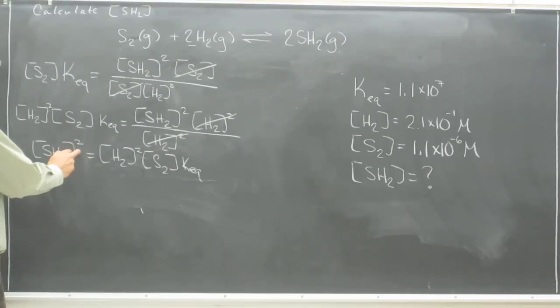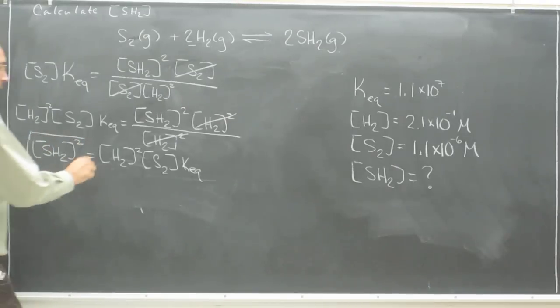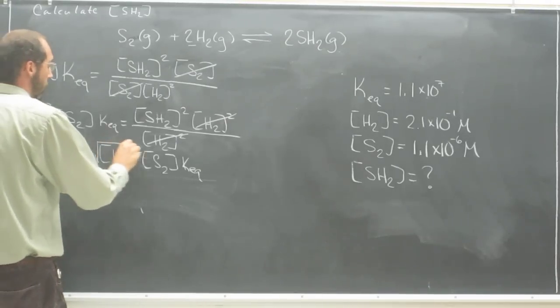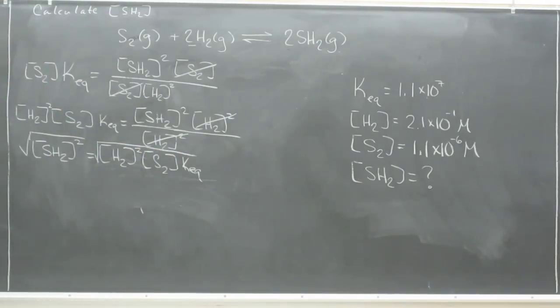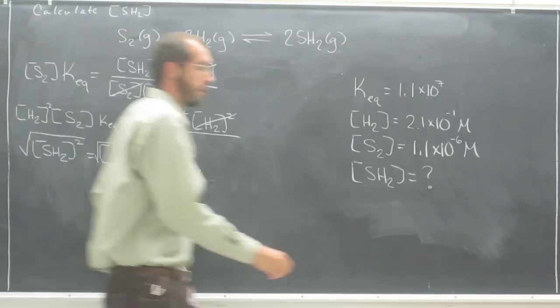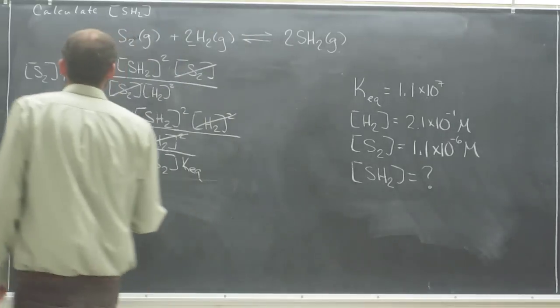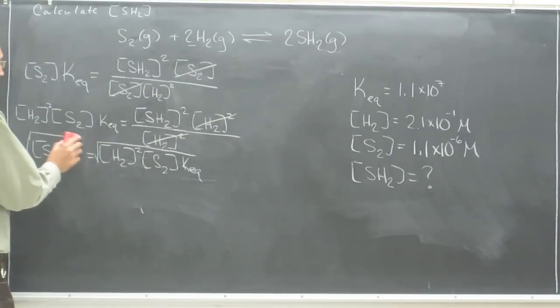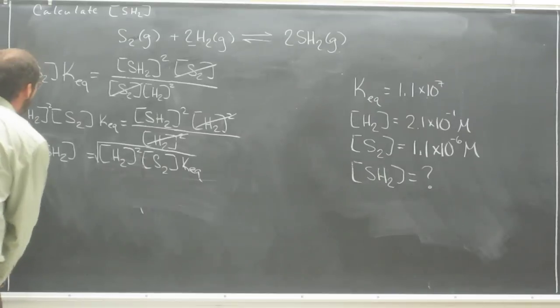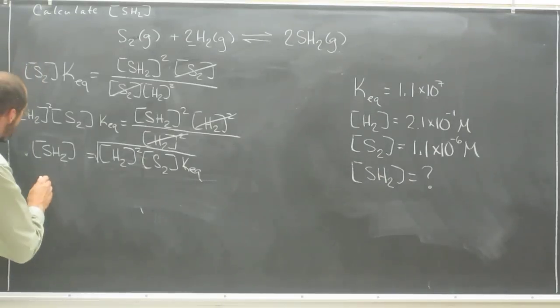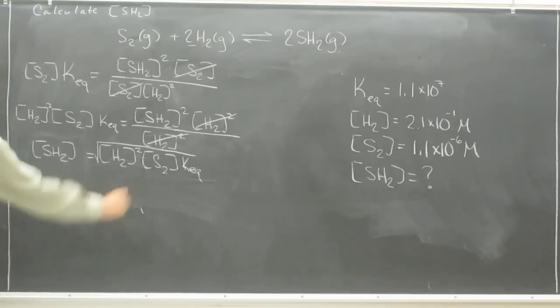To get rid of the square, you've got to take the square root of both sides. So that will get rid of this square, squaring the square root. And so we get the new expression.